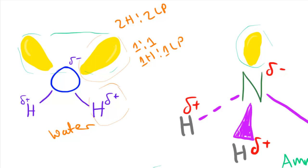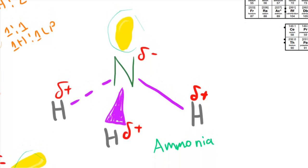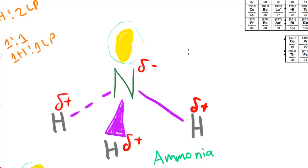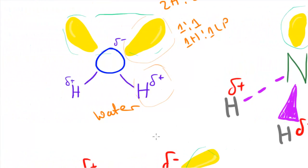Now looking at ammonia, NH₃: we have three hydrogen atoms for every one lone pair. This means the molecule will only form around two hydrogen bonds per molecule, leaving some hydrogens unable to participate because there simply aren't enough lone pairs for all of them.